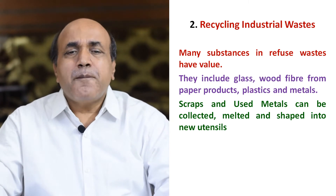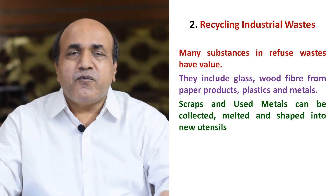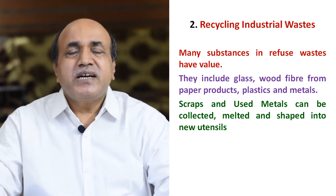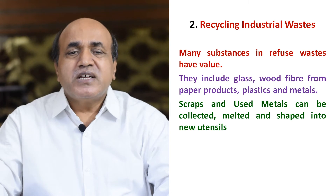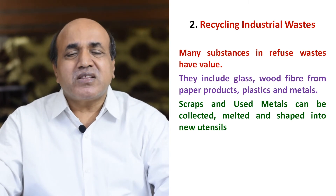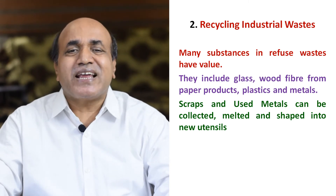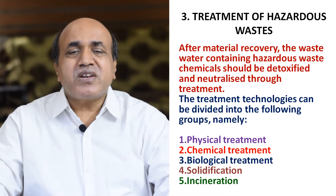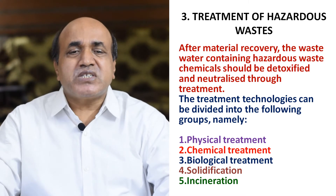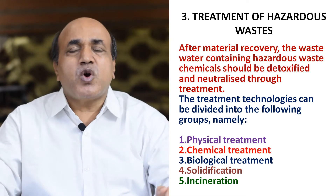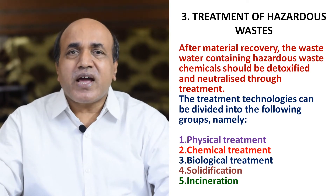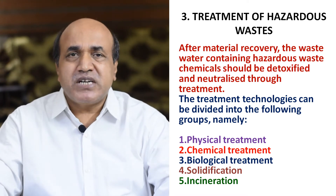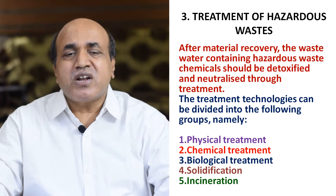Second strategy is recycling industrial waste. Many substances in refuse waste have value — these include glass, wood fiber from paper products, plastics, and metal scraps. Scrap and used metals can be collected, melted, and shaped into new utensils. After material recovery, waste water containing hazardous chemicals should be detoxified and neutralized through treatment — which may be physical, chemical, biological, solidification, or incineration.